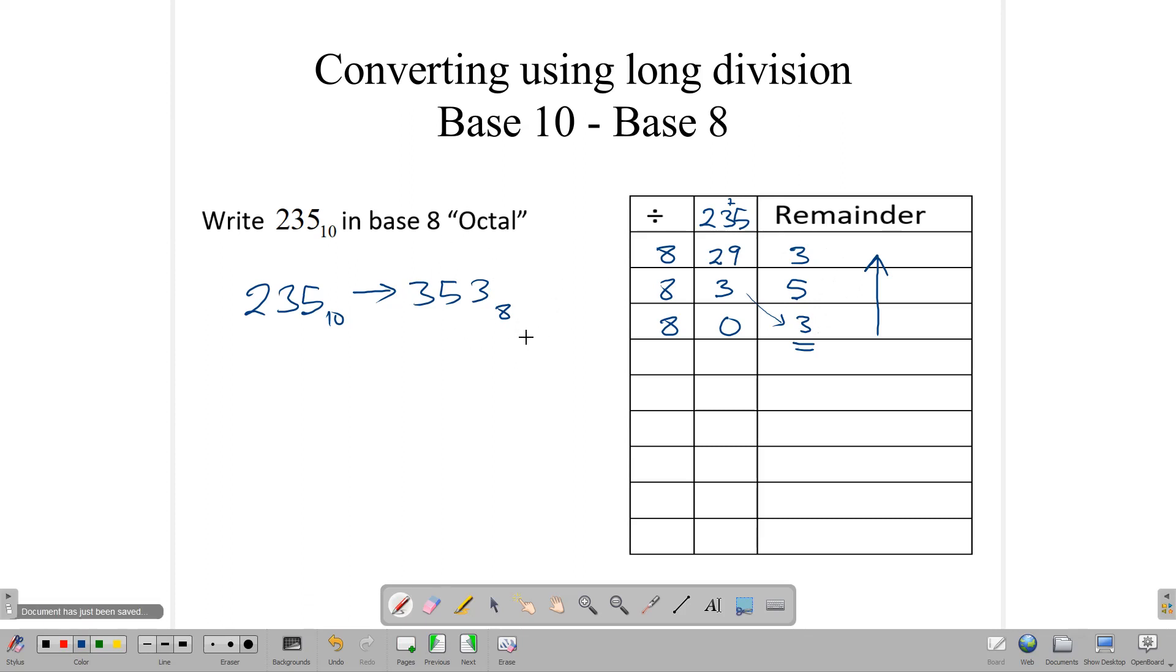So this is the process that we use to convert a base 10 number to any other base, whatever the number is. We write our number here, and we do the division, put our answer here, put the remainder over this column, and then we write our answer in that direction starting at the last digit.